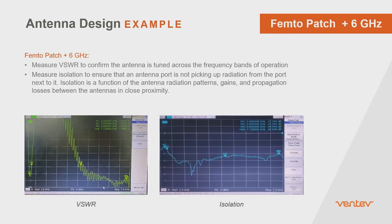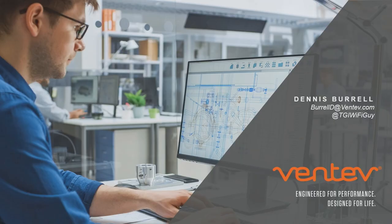You also want to measure your VSWR, which tells you how the antenna resonates. We set a VSWR of 2:1, which is standard for low power for these types of antenna designs — meaning 90% of the power is going to the antenna and 10% is being reflected. Then you also look at the isolation, which tells you about the crosstalk between each port on the antenna.